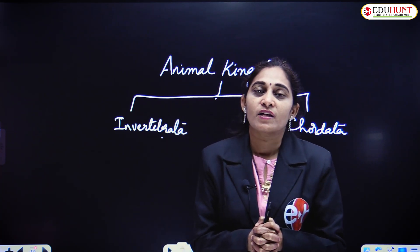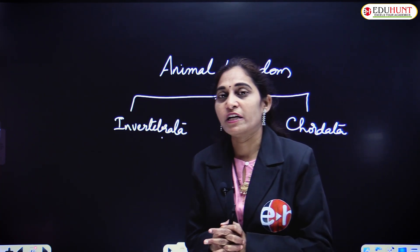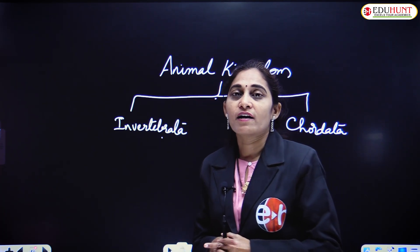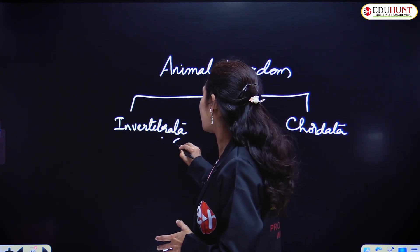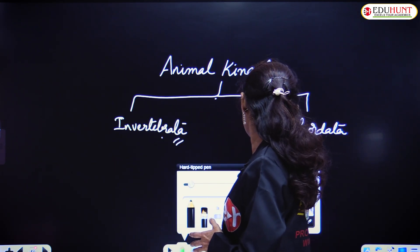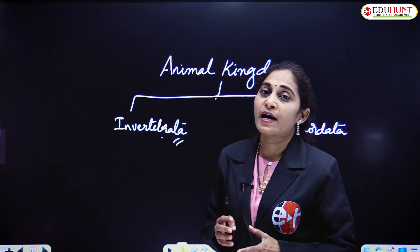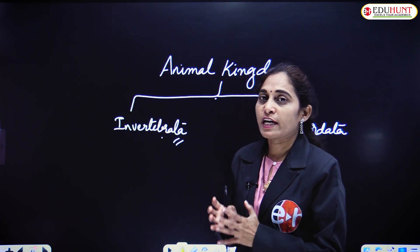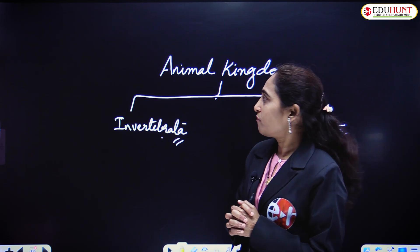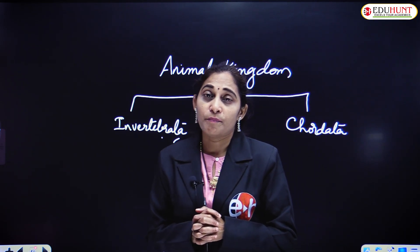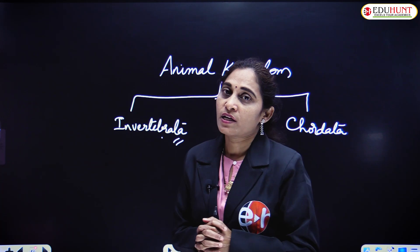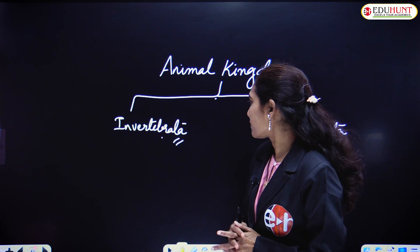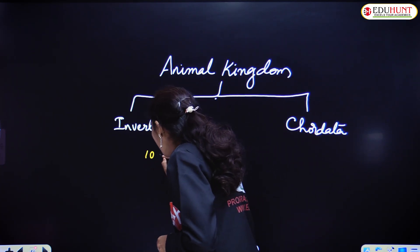Animal kingdom is divided into 11 major phyla. Out of 11 major phyla, 10 major phyla fall under the category of invertebrates — the animals which do not possess the vertebral column. If we classify the animal kingdom based on the presence of vertebral column, these are of two types: invertebrates and vertebrates. The invertebrates have 10 major phyla.